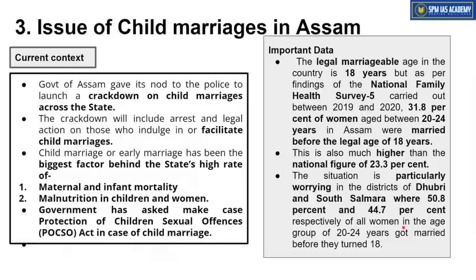Ab current context pe aate hain. Haal mein Assam government ne kaafi strict steps uthate hue ek faisla sunaya hai, jahan unhone kaha hai ki child marriages jahan bhi ho rahi hain aur jahan bhi forceful tarike se child marriages karaane ki koshish ki ja rahi hai, wahan Assam Police ko Assam government ne ek tarah ka approval diya hai. Government has given go-ahead to the police to launch a crackdown on child marriages across the state, including arrest and legal action against those who indulge or facilitate child marriages.